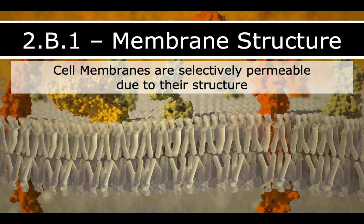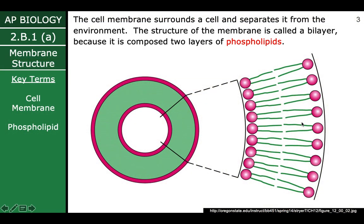Cell membranes are what we call selectively permeable, and that sounds really fancy, but we're going to break it down and make it sound nice and easy. And that's all due to their structure — the structure of the membrane.